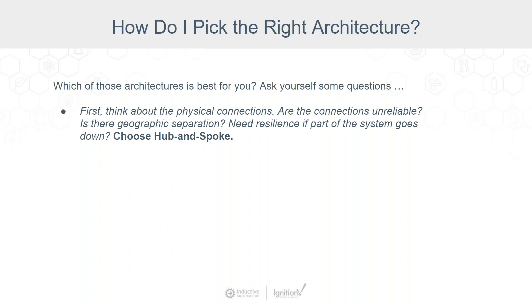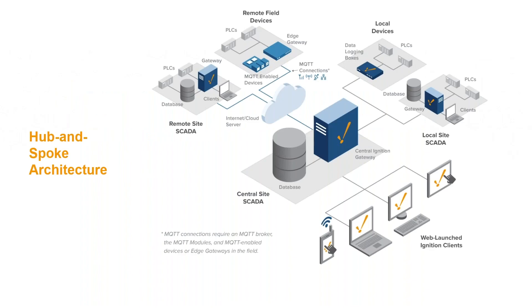First, think about those physical connections. Are the connections unreliable? Is there geographic separation? Do you need resilience if part of that system goes down? If you said yes to any of these, choose Hub & Spoke. This is the Hub & Spoke architecture — every one of those different lines has the potential of having problems, going down, coming back up. The whole idea behind Hub & Spoke is that it provides resiliency for those connections if there is a communication loss.